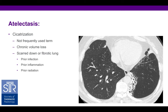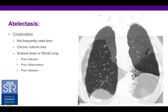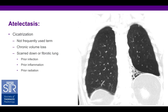The last type is cicatrization atelectasis — you may never hear that term again, but it refers to chronic volume loss with scarred down or fibrotic lung. This could be related to prior inflammation, infection, or post-radiation fibrosis. On this axial view, the left lower lobe is really small, opacified, with crowded patent airways. The key to this type is that it's fixed — it's not getting any better, it's scarred down.